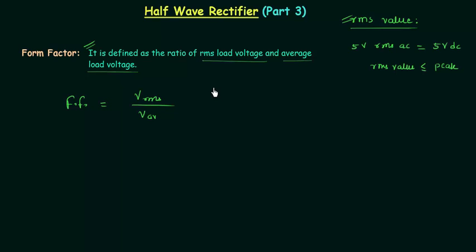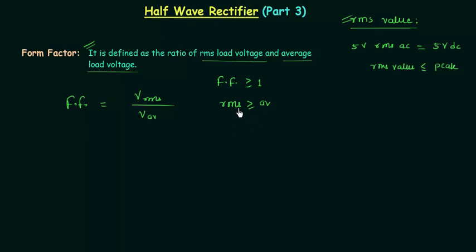Form factor is always greater than or equal to 1, because the RMS value is always greater than or equal to the average value. When they are the same, the form factor is equal to 1, and in other cases the form factor is greater than 1.